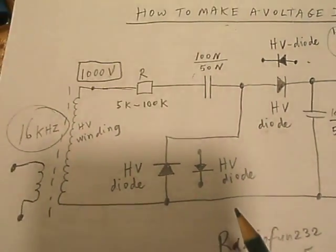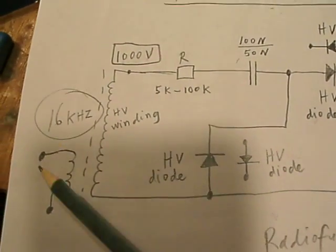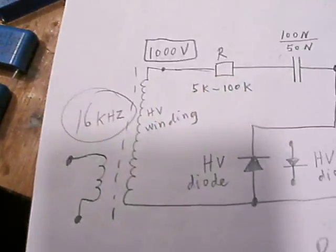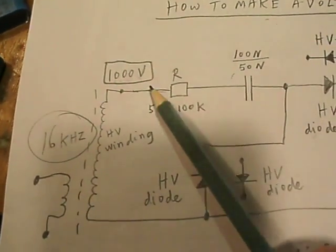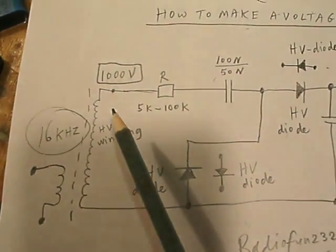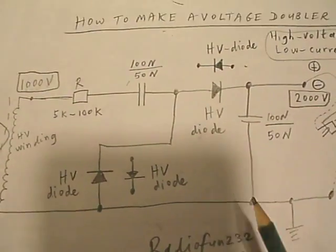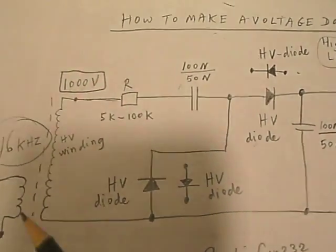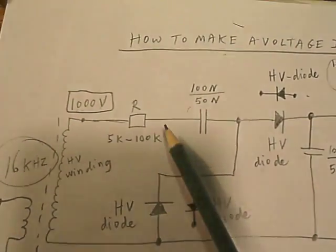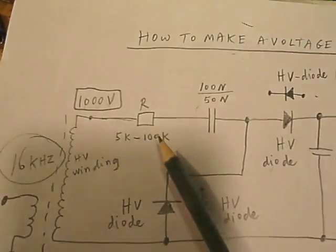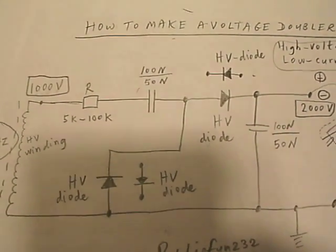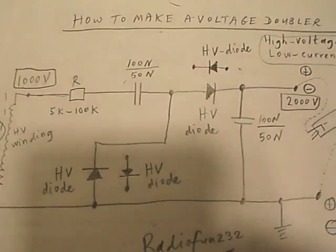And in that case we have the same circuit but we use now special high voltage diodes. 16 kHz is the output from a high voltage transformer in an old tube type television set, this transformer. And now we can use a resistor to limit the output current. The capacitors here have to have a low value, 100 nF for instance, or 0.1 microfarad. It's the same.